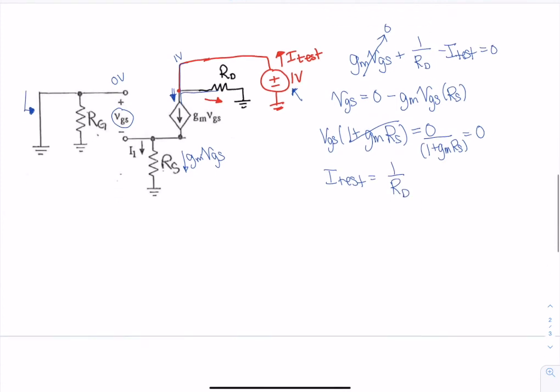Now R_th is one over this i_test, and so that's just rd.